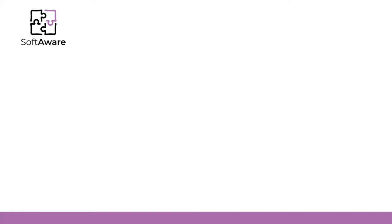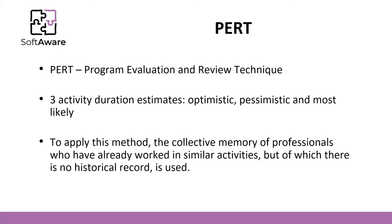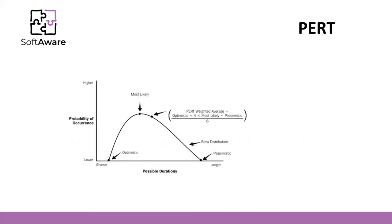Another technique is PERT — Program Evaluation and Review Technique. Three activity duration estimations are made: optimistic, pessimistic, and most likely. You then apply the PERT weighted average formula: (optimistic + 4 × most likely + pessimistic) ÷ 6. This value represents the effort estimation for one work package, and we estimate work package by work package.